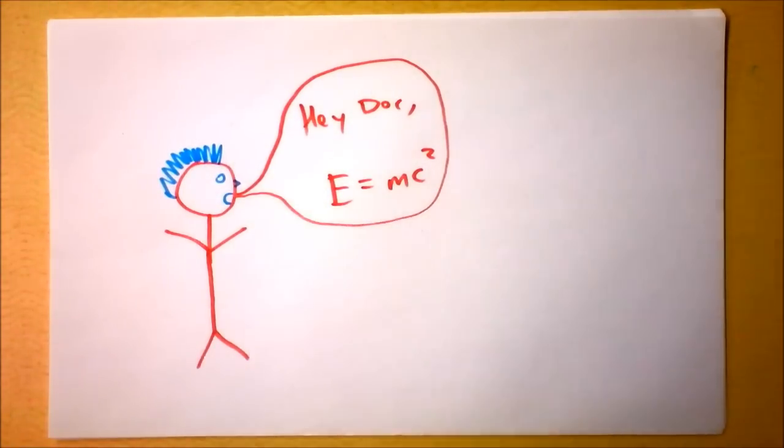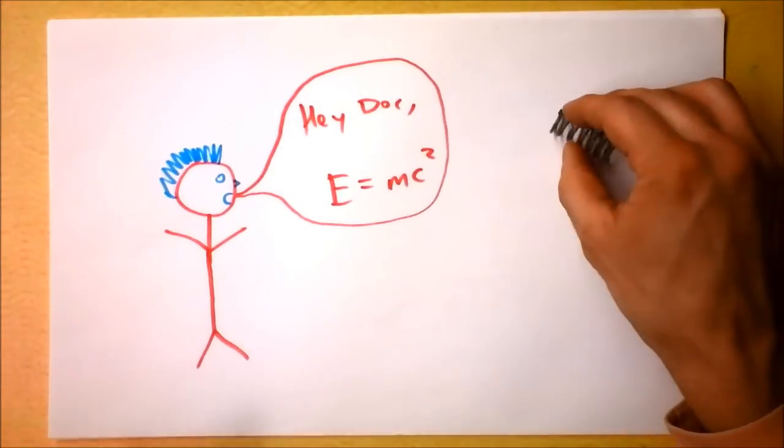So I was talking to this punk kid the other day, and he said, hey doc, E is MC squared. Does that mean something weird about springs?